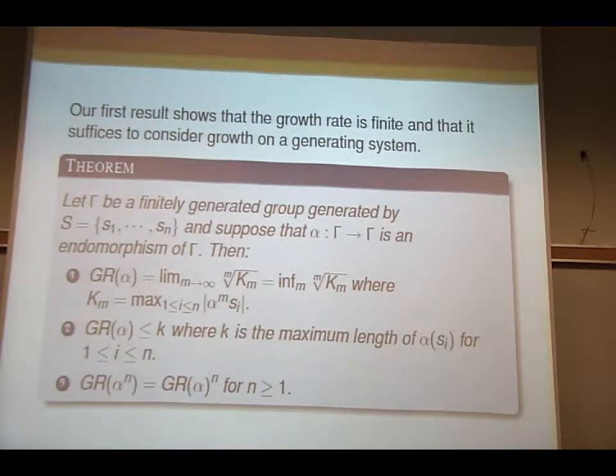So again, as before, S is the generating set, gamma is finitely generated, alpha is the endomorphism. If you consider K_m to be the maximum length of alpha^m applying to the generators, if you consider this to be K_m, then you can define the growth rate to be the limit of the n-th root of K_m or infimum of n-th root of K_m. This is another way to think about it.